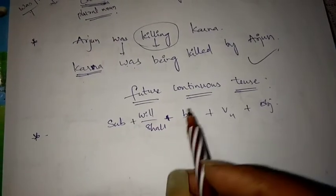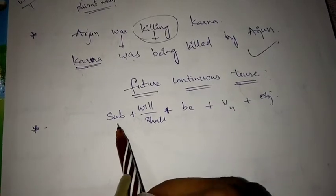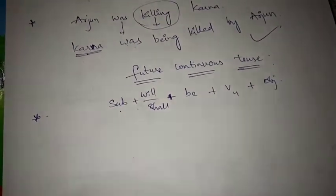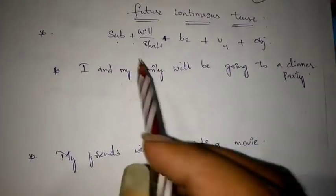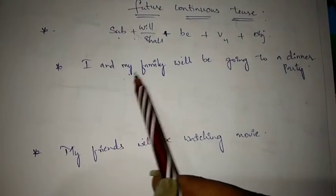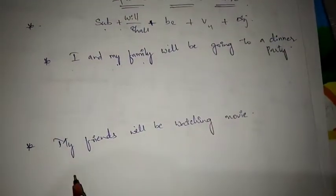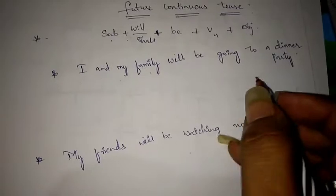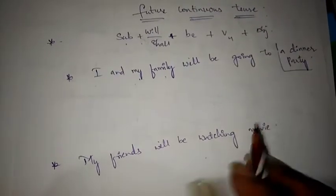Now let us go to future continuous tense. The formula is: Subject + will/shall + be + V4 + object. The two examples are: 'I and my family will be going to a dinner party' and 'My friends will be watching a movie.'